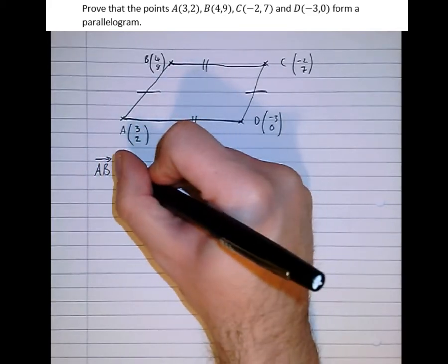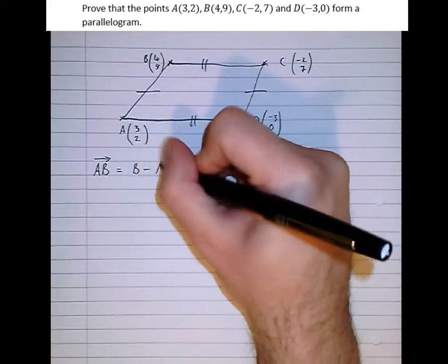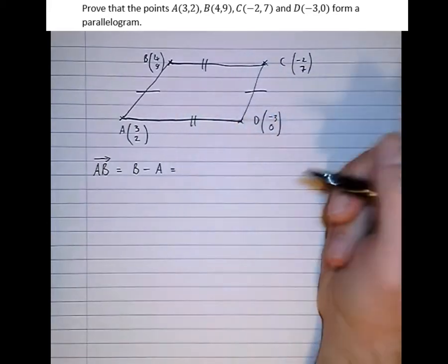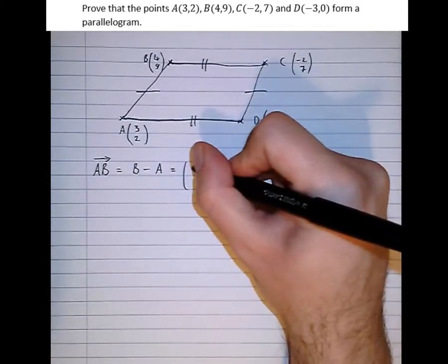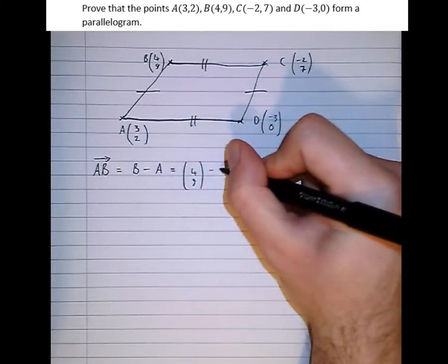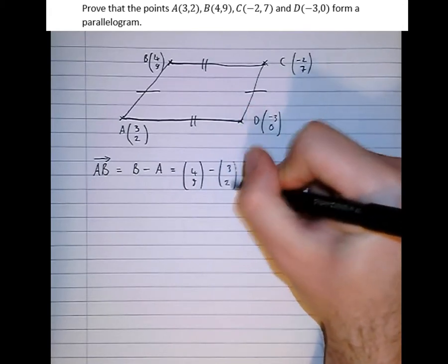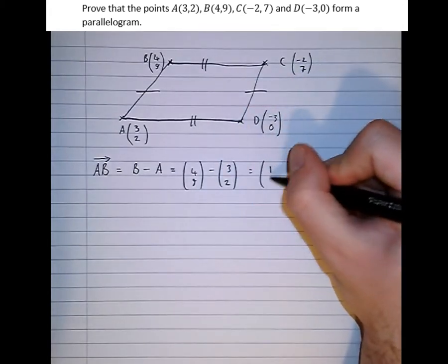AB, as we learned before, was B minus A. We learned that in a previous tutorial video. Which is equal to (4,9) take (3,2), which is (1,7).